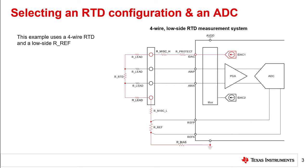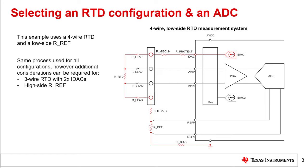Our example system measures a four wire RTD using a low side RF. A generic version of this system is shown on the right side of this slide. The IDAC current, highlighted in red, flows from the IDAC, through the RTD, through RF, and then out to ground. The PGA amplifies this voltage, which can be measured by the ADC. Note that though this same process is used for all different RTD configurations, additional considerations are necessary for three wire RTD systems or when a high side RF is used.